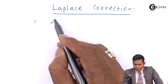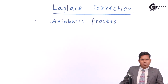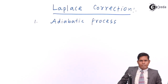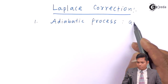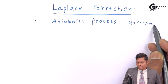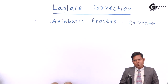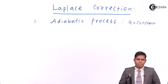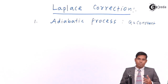So adiabatic process. For an adiabatic process, Q — the heat — is constant. So instead of temperature remaining constant during compression and rarefaction, Laplace said the heat will remain the same during compression and rarefaction. So when compression or rarefaction is formed, heat may be generated but the heat will remain constant.